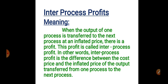Under process costing, we always transfer the output of one process to the next — for example, process A, B, C. The output of process A transfers to process B, and output of process B transfers to process C. In previous problems, we transferred at cost price without any alteration — for example, if output of process A is 10,000 rupees, the input of process B is also 10,000 rupees. But under inter process profit, this changes.